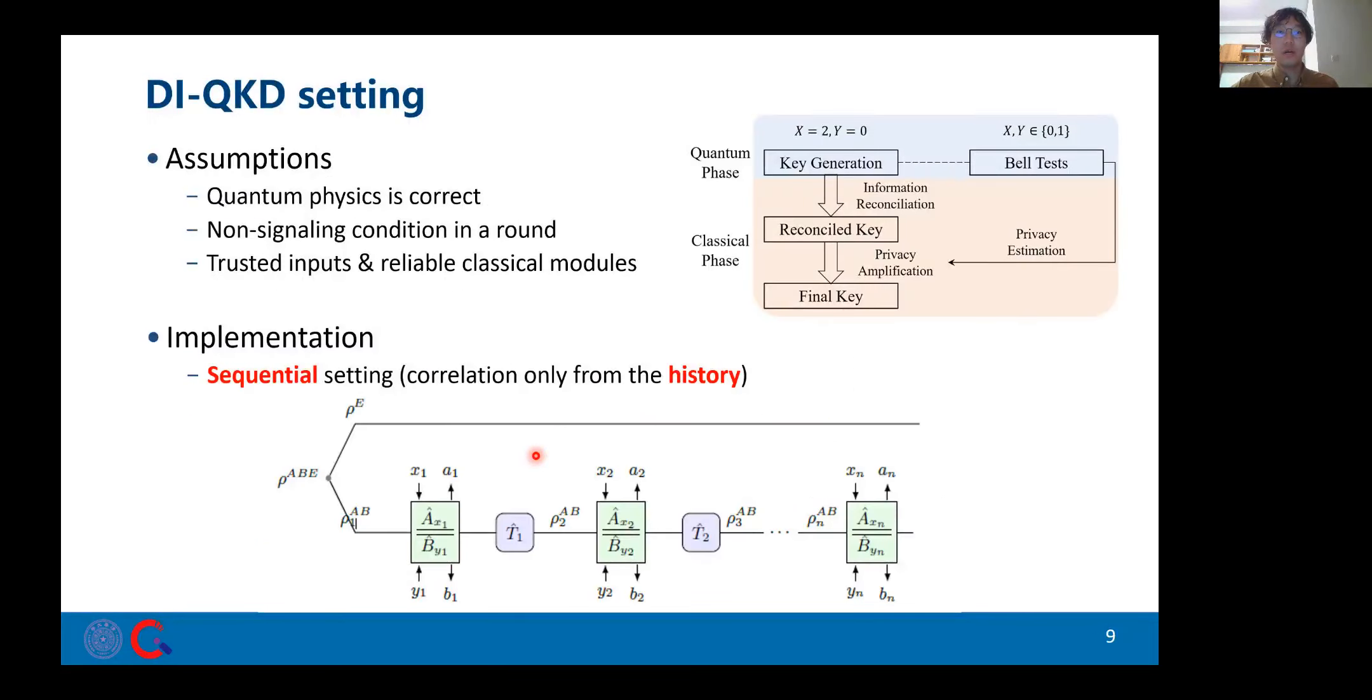So here comes to our work. First, let's have a look at the protocol we use. We apply the modified ACAD-91 protocol, and the security assumptions are essentially the same as those for a Bell test. In particular, we trust the randomness for input settings and pose a non-signaling condition between the users in quantum measurements. A special requirement for implementation is a sequential setting where the users perform measurements round by round, such that the correlation only comes from the past. This shall play a vital role in our analysis.